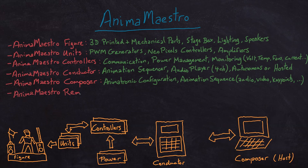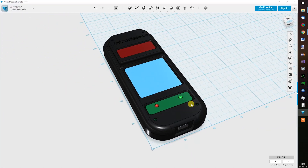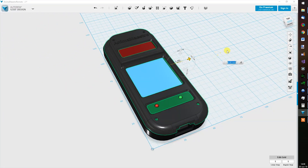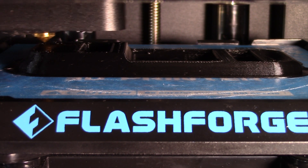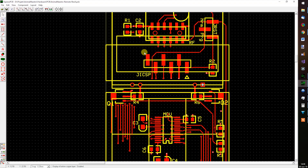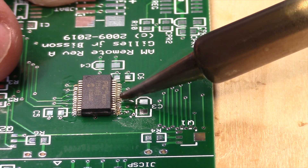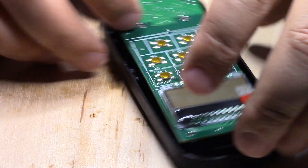The next series will be dedicated to the Anima Maestro Remote — an RF remote control I designed to communicate with and operate the Anima Maestro Conductor. This short series will look at the 3D modeling and 3D printing of the remote control, the design and implementation of the electronic board including a LiPo battery charger, as well as the firmware programming of the remote.